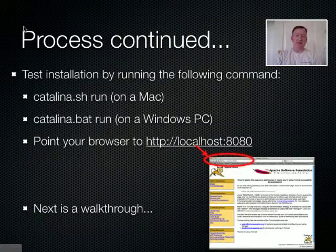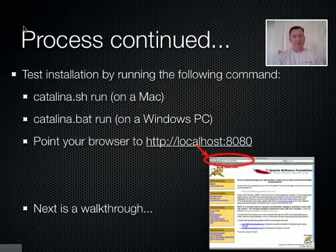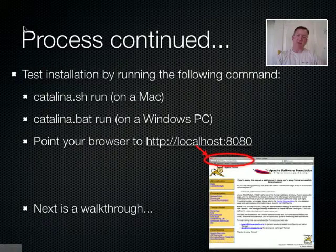Once we've got it installed, we're going to go ahead and run a shell script on a Mac or Linux environment, or a batch file on a Windows environment. And once that script is run, we've bootstrapped our Tomcat server. We can then point our browser to our local Tomcat server and verify that it's been brought up correctly. So let's go ahead with the walkthrough.